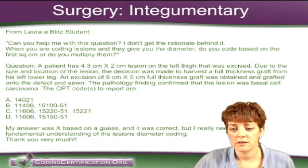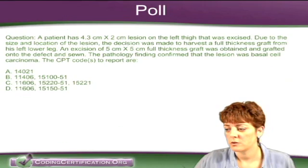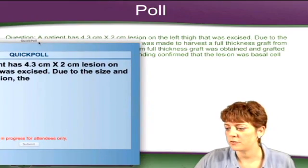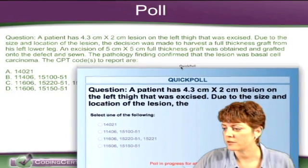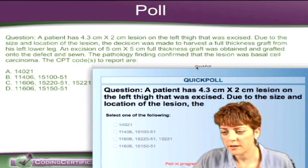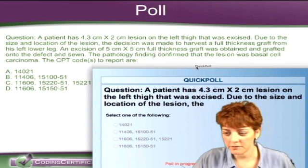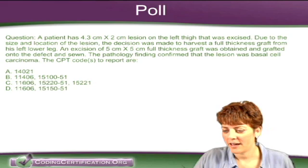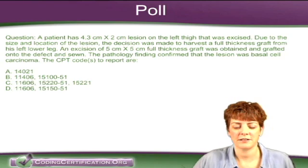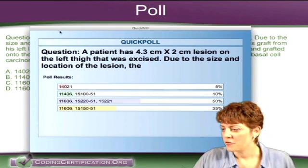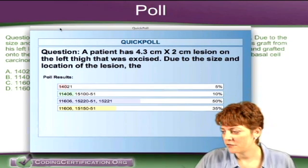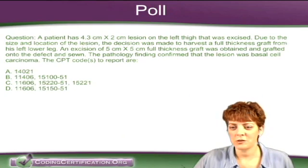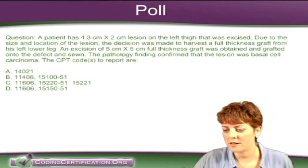Let's do the poll. Let me launch that and give you guys a minute or two to fill that out. Votes are coming in — 16% have voted. We're going to close the poll. So 5% voted for A, 10% for B, 50% for C, and 35% for D. The student asking the question picked C as well as the majority of you.